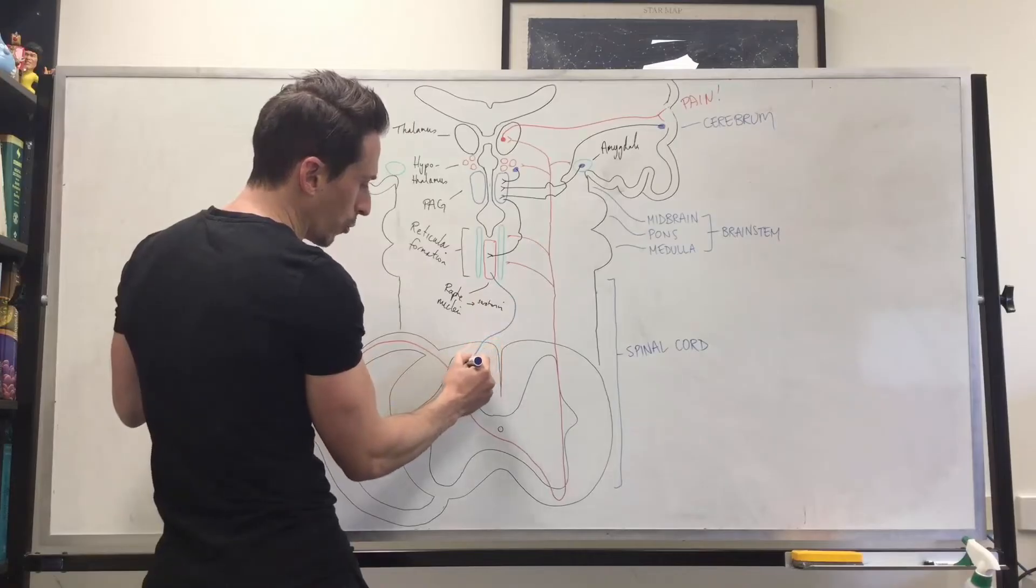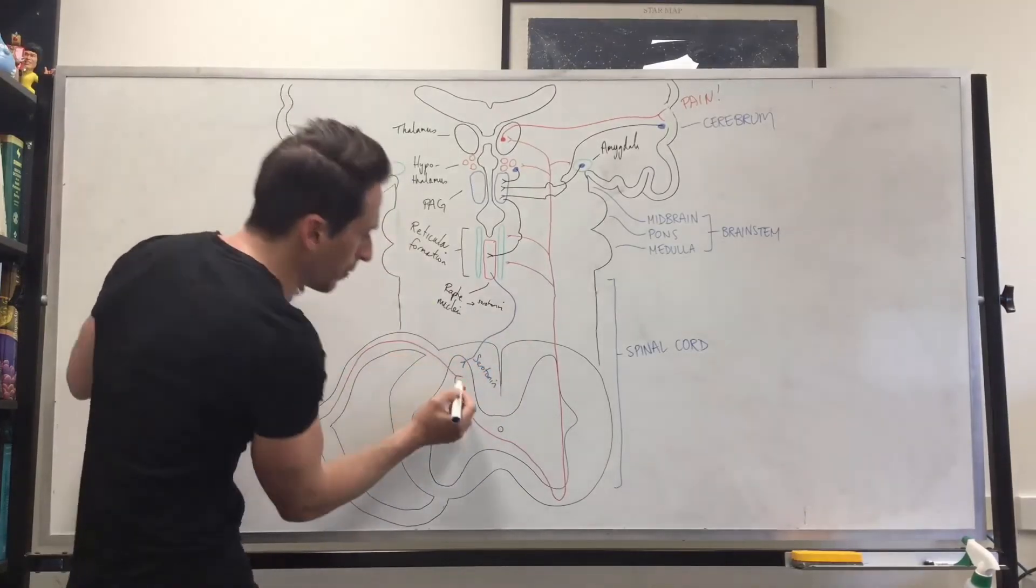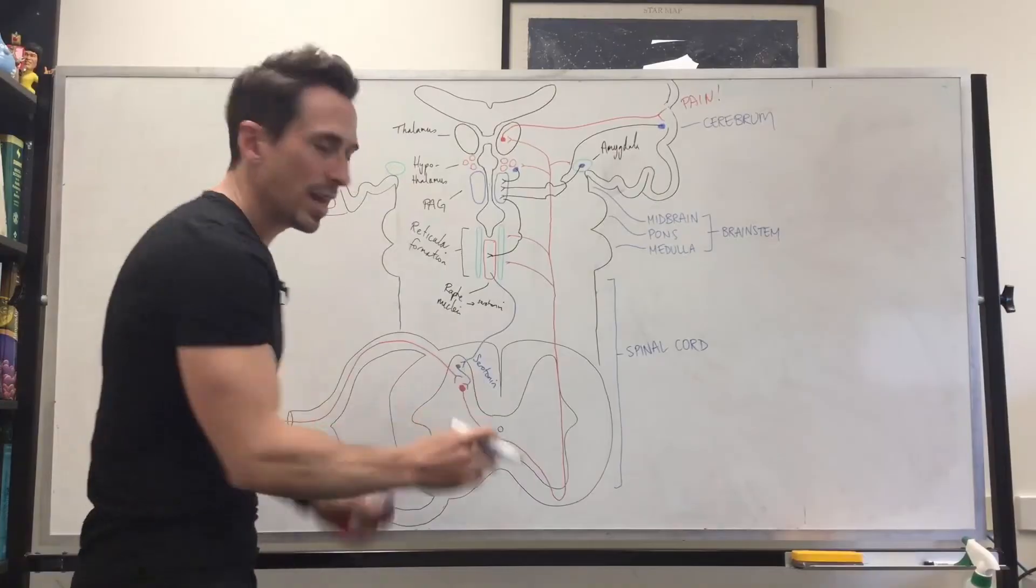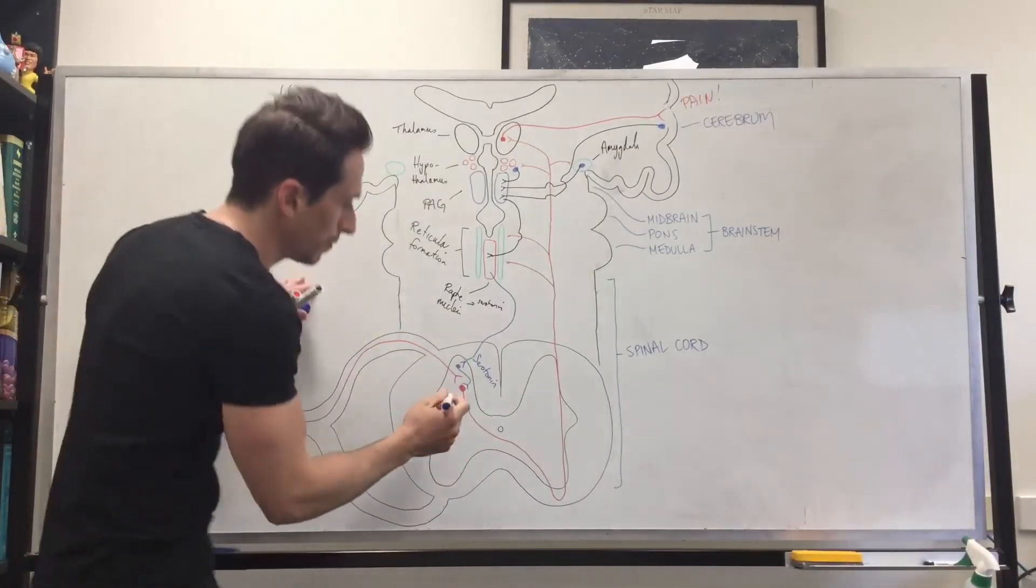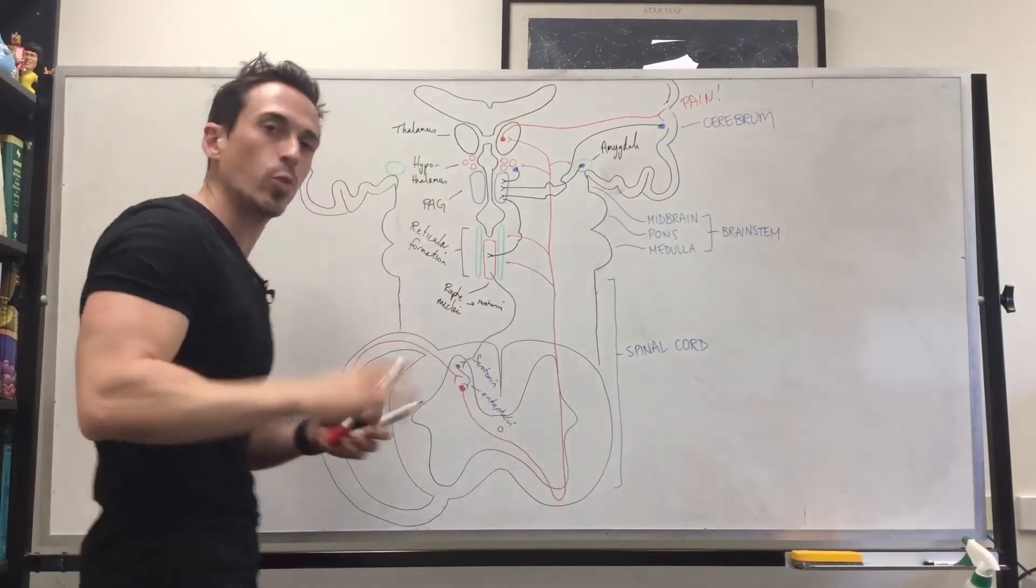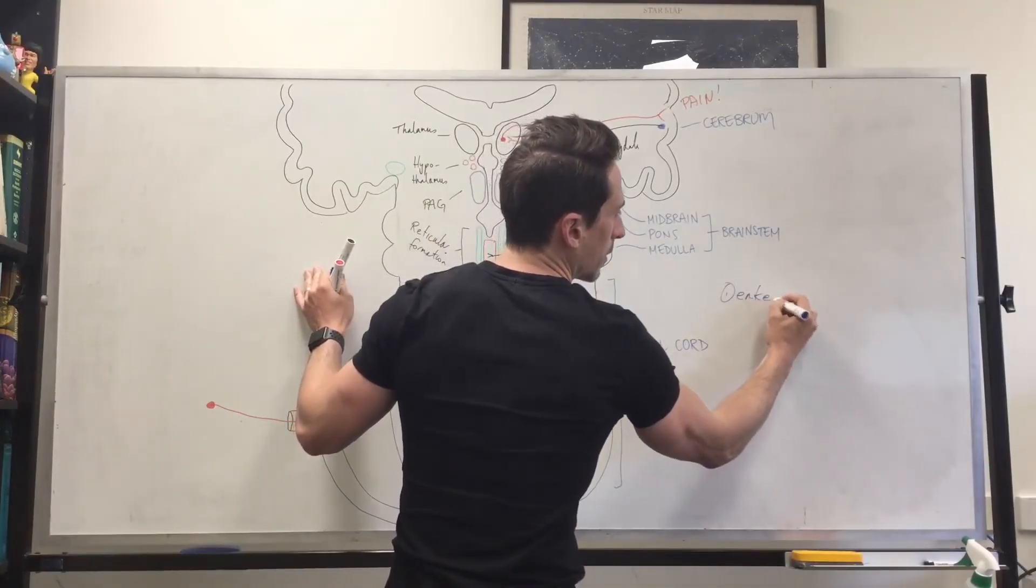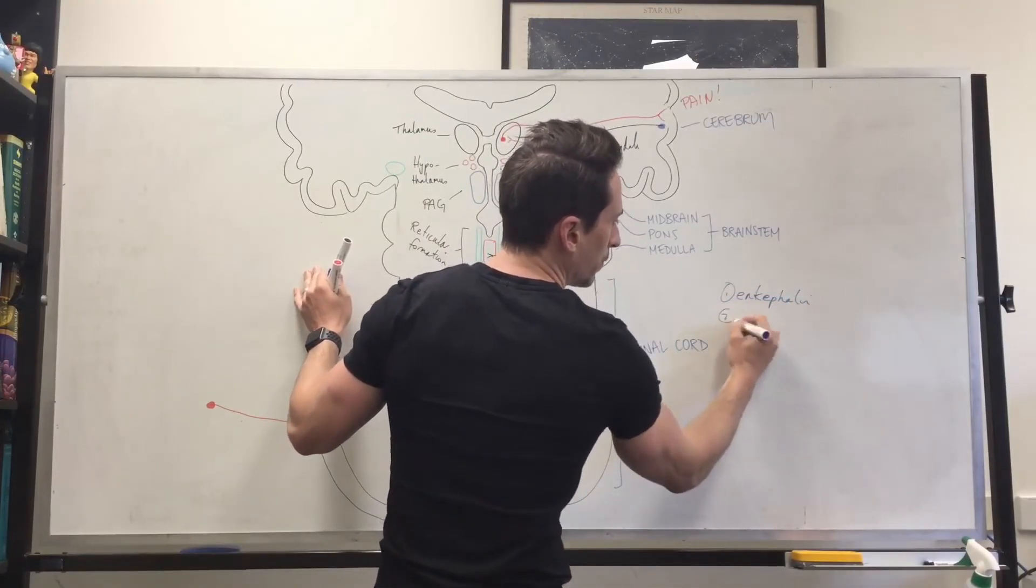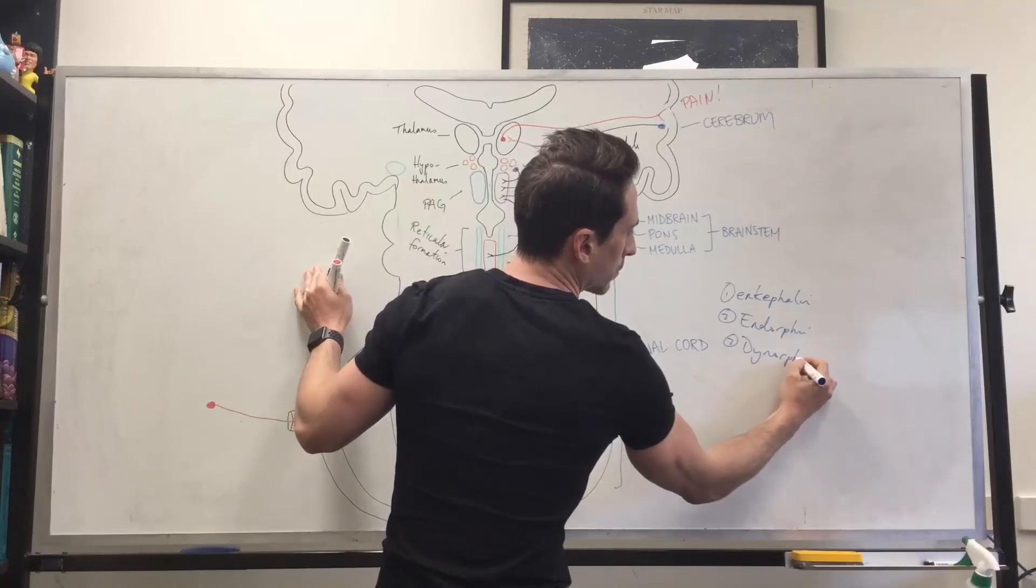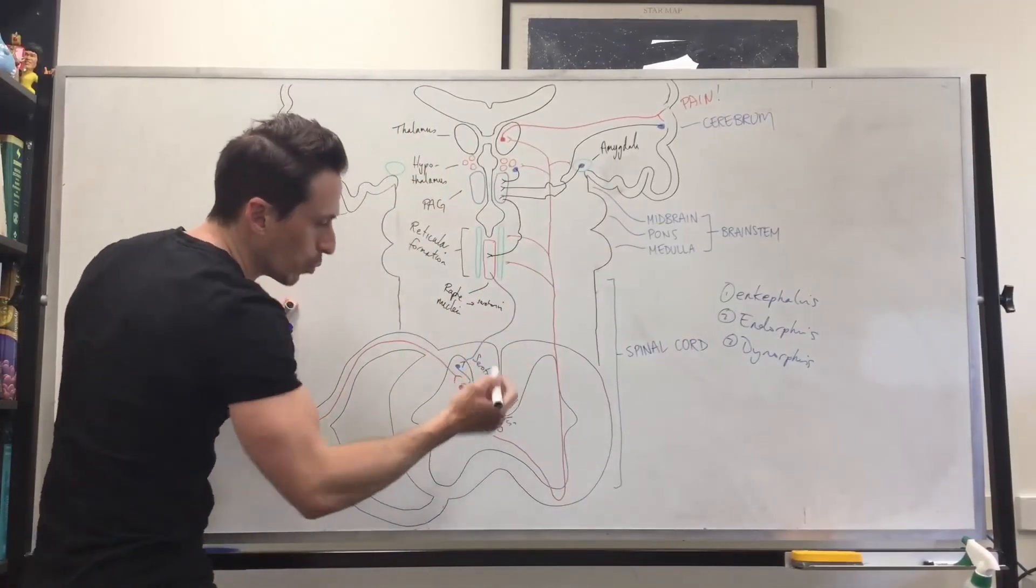And what this serotonergic neuron will do is it will synapse. So it releases serotonin. It will synapse with another neuron, which then synapses with this secondary pain neuron. Now, this other neuron is a neuron that produces enkephalin. Now, enkephalin is one of the three endogenous opioids, pain relief chemicals that we release. What are the three? You've got enkephalin, endorphin, and dynorphin. In actual fact, you've got multiple enkephalins, endorphins, and dynorphins. Here, it's enkephalin, and the enkephalin will bind to opioid receptors.